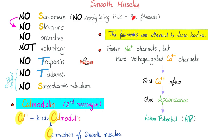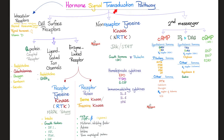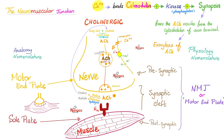Here is everything you need to know about smooth muscles — please pause and review. Don't forget their second messenger is calmodulin. Who's the first messenger then? Calcium is the first messenger; calmodulin is the second messenger. Do you remember the hormone signal transduction pathways? We talked about them before in my endocrinology playlist. The calmodulin system is another second messenger system.